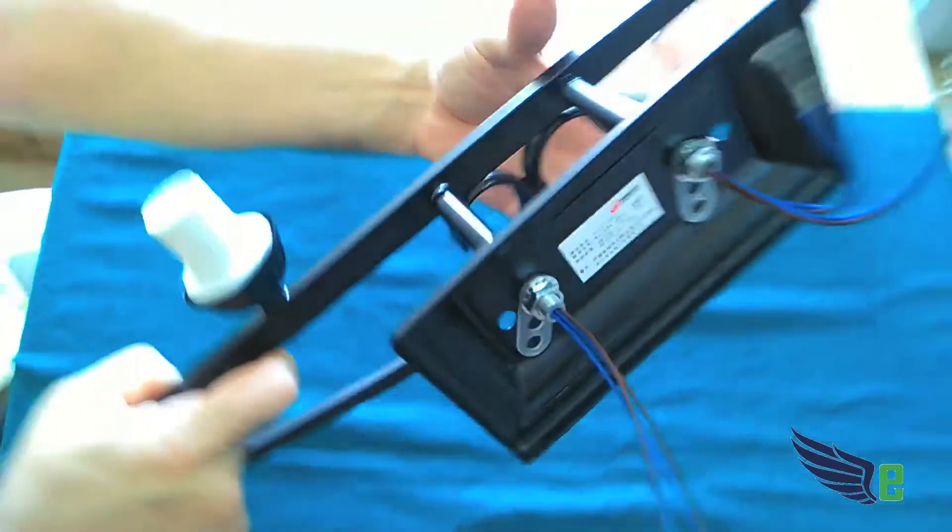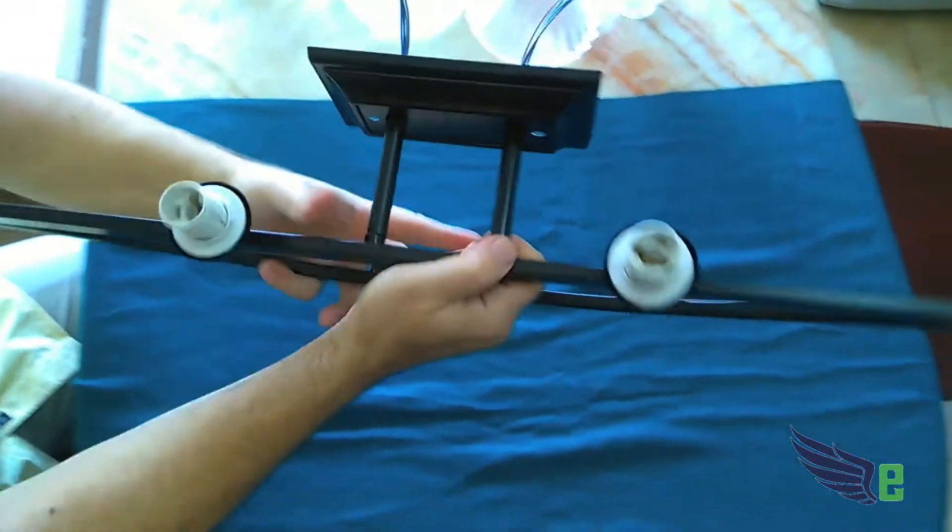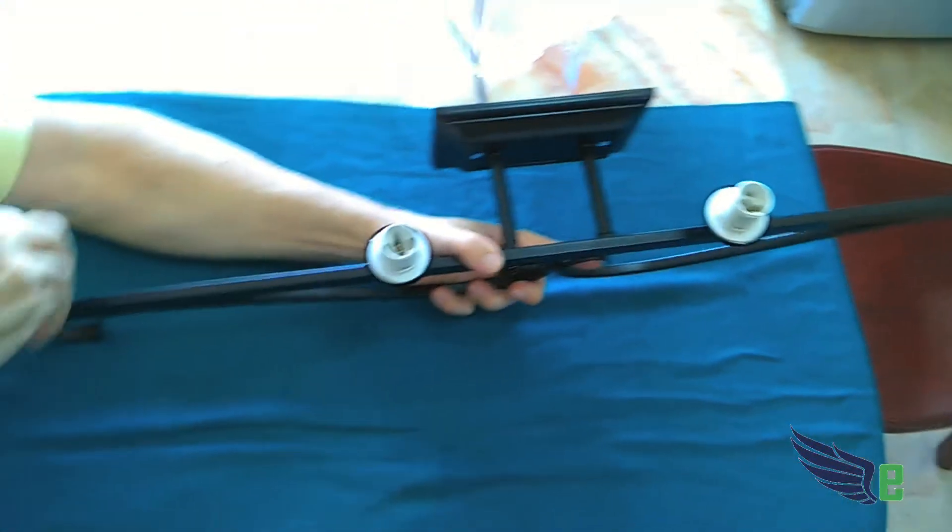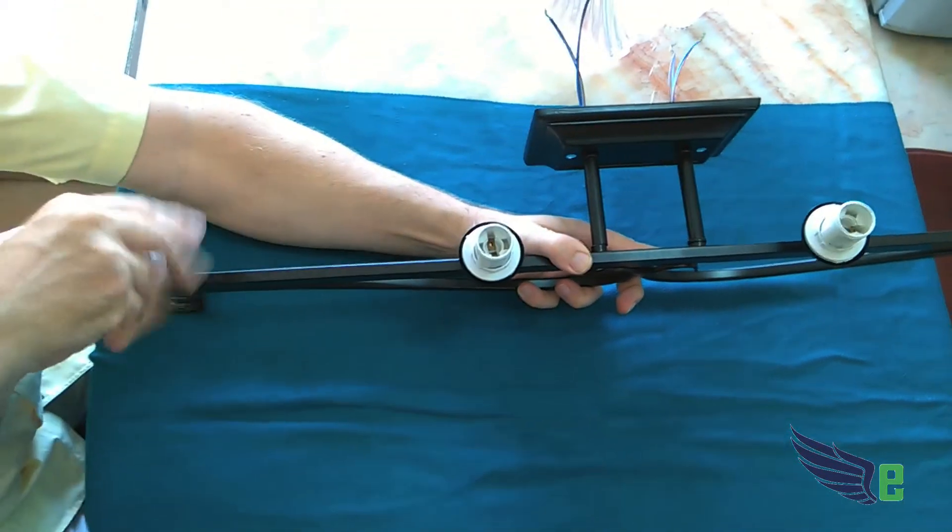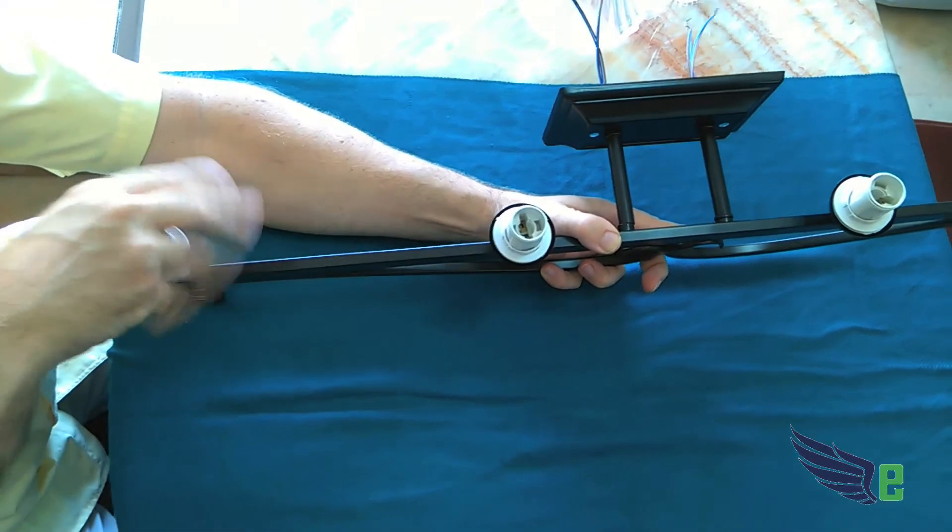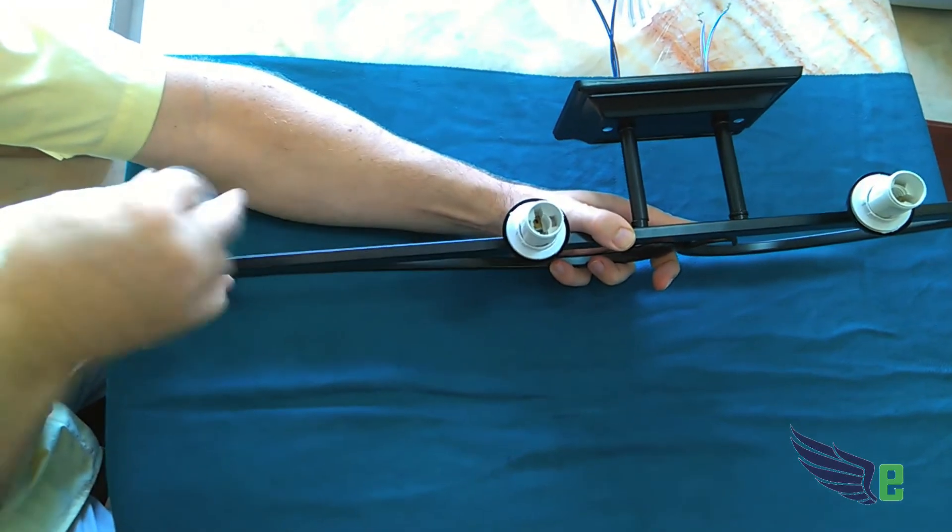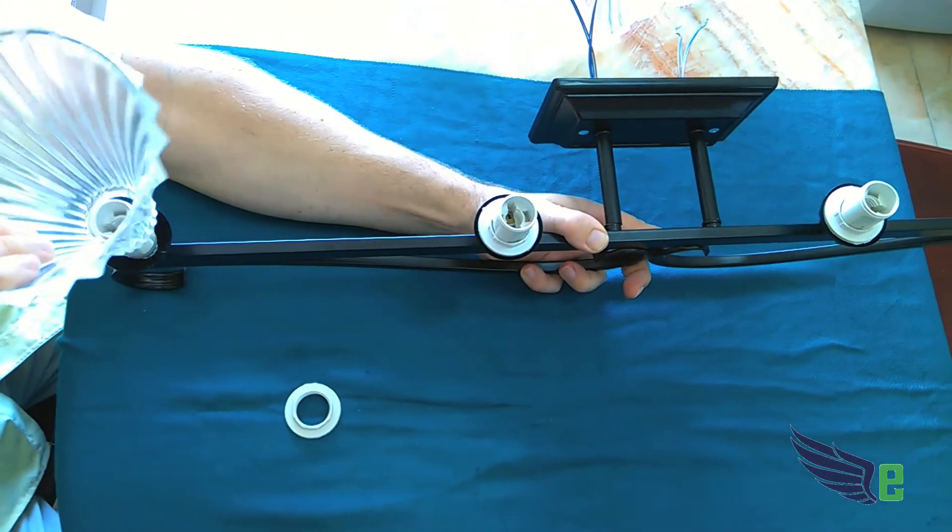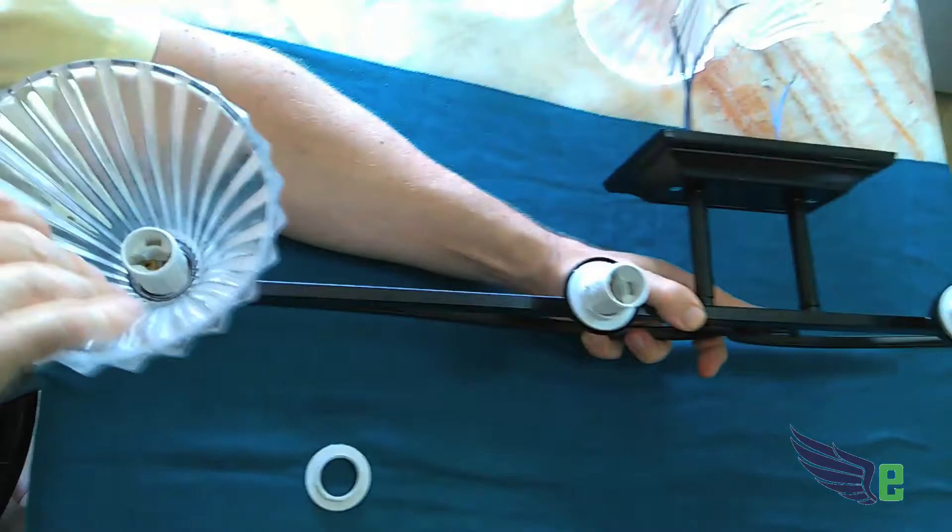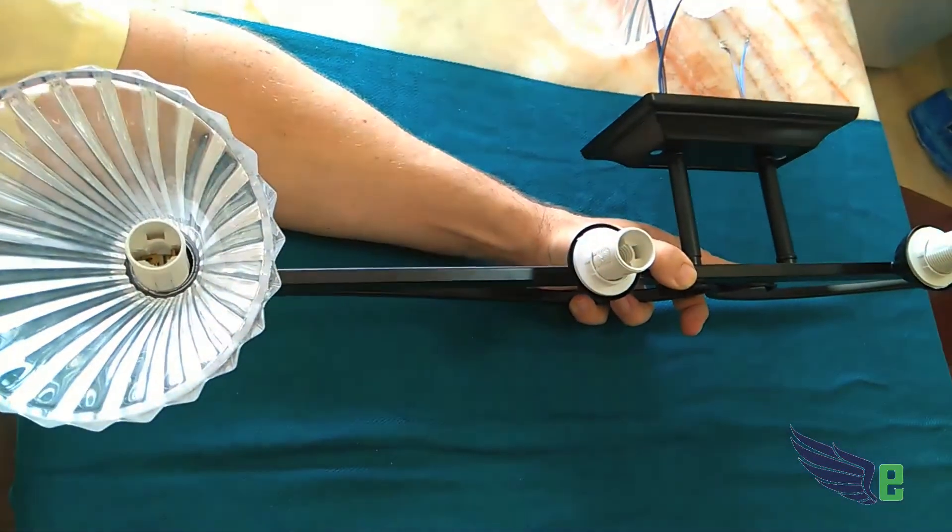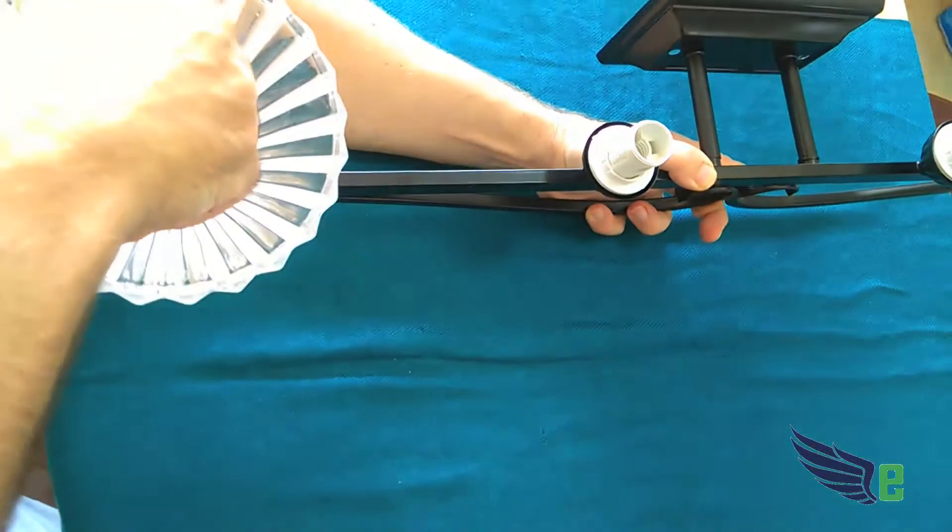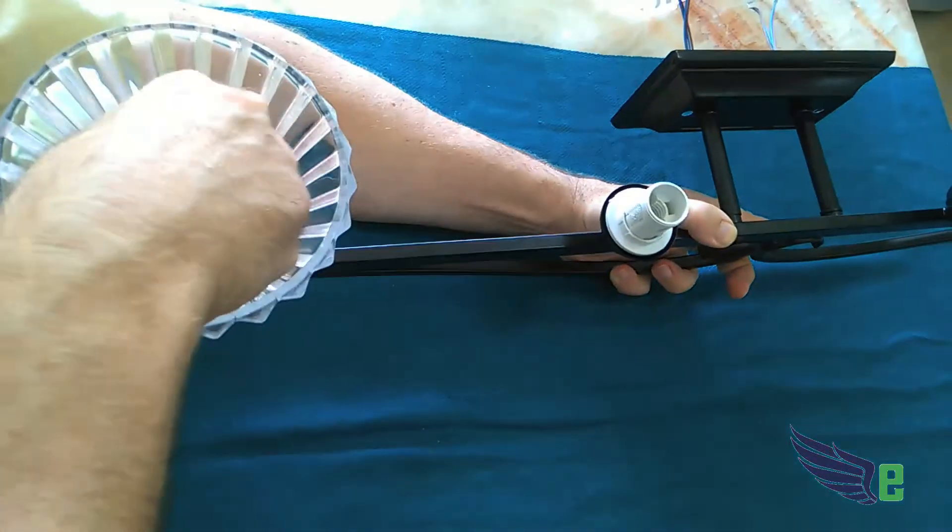Now, once that's done, you have your full fixture. And what you're going to do is you're going to take off these little plastic holders, put on the glass, and then put the holder back piece down. That will hold this nicely into place.